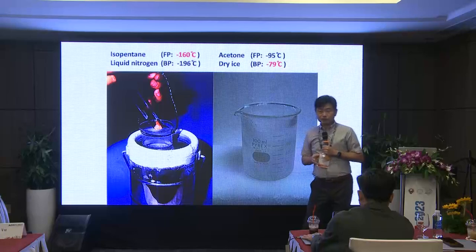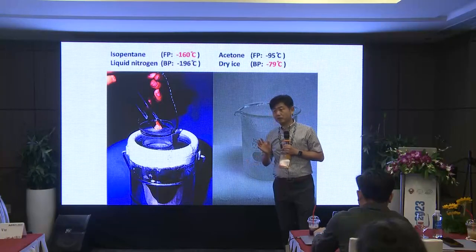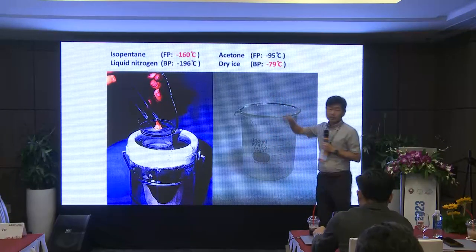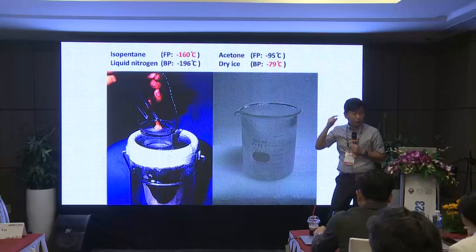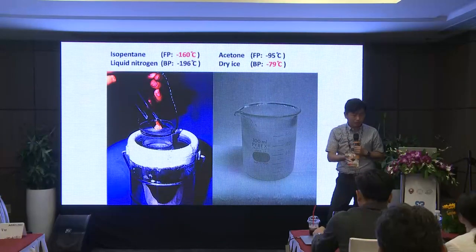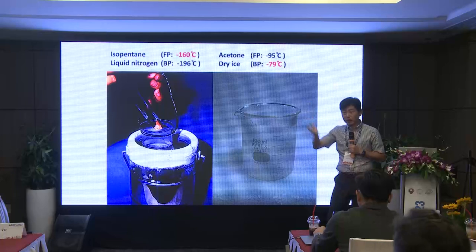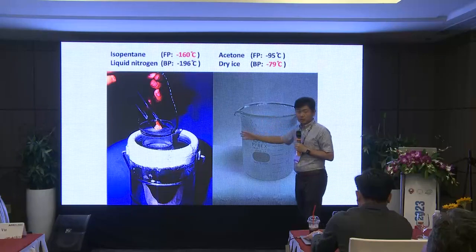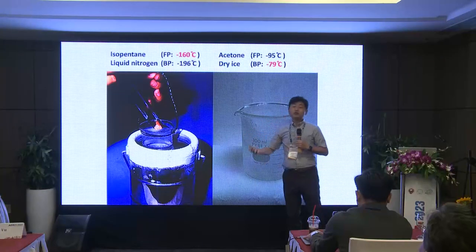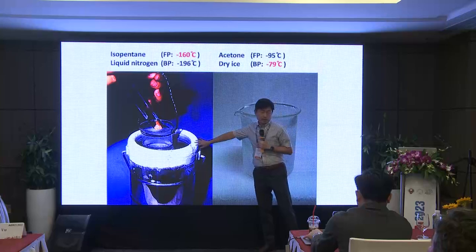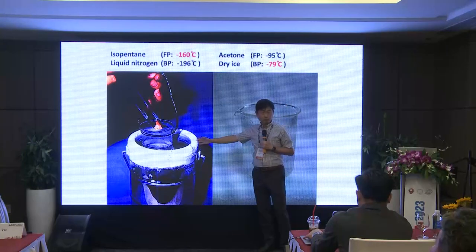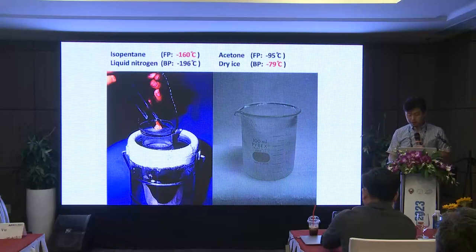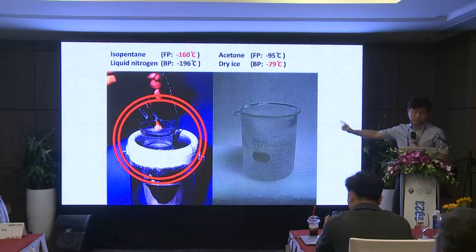Both minus 160 and minus 79 are very cold, but the difference is 81 degrees — 81 degrees higher than body temperature would be over 100 degrees. Both methods are extremely cold for us, but minus 160 is actually much colder and therefore much better. If you are from a tertiary hospital, I think you should use the liquid nitrogen and isopentane method.